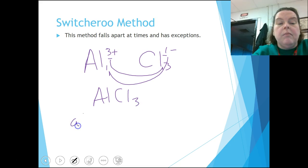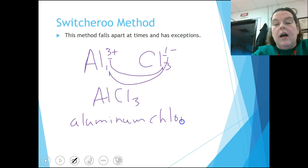So I get a formula of AlCl3. And because aluminum keeps its name, and it's not a D-block metal, I'm going to call that aluminum chloride.